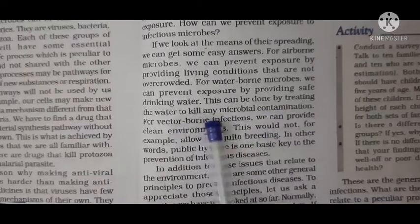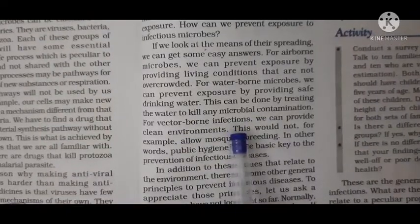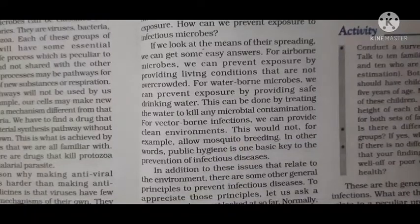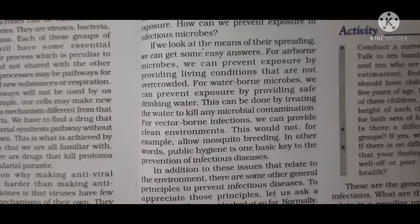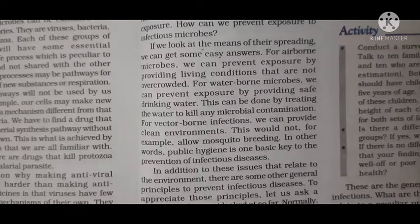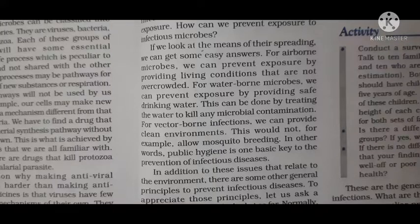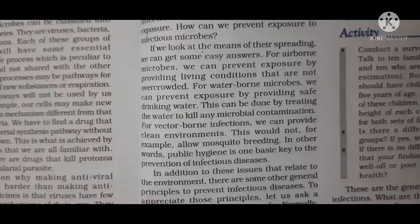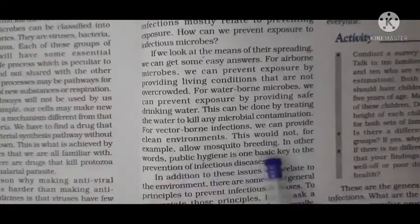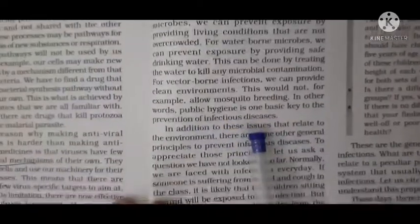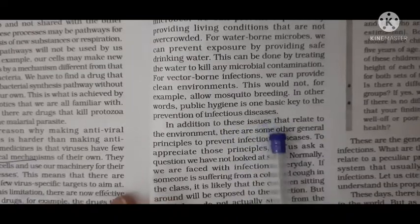For vector-borne infections, some insect or animal carries the microbe. In that case, prevention involves keeping the surroundings clean. For example, mosquitoes cause malaria and dengue, so the environment should be clean and dry, with no breeding grounds for mosquitoes. In other words, public hygiene is one basic key to the prevention of infectious disease.